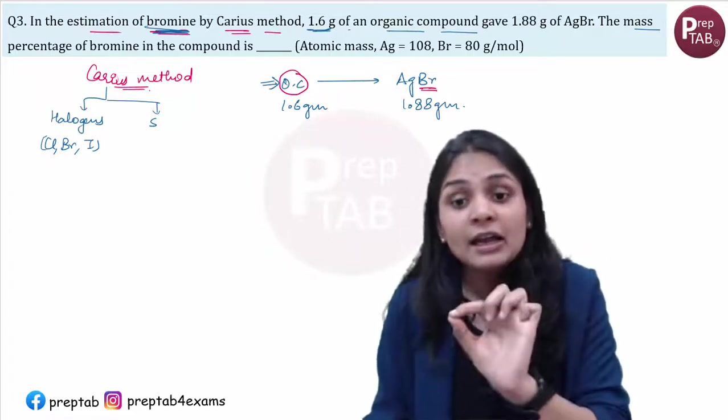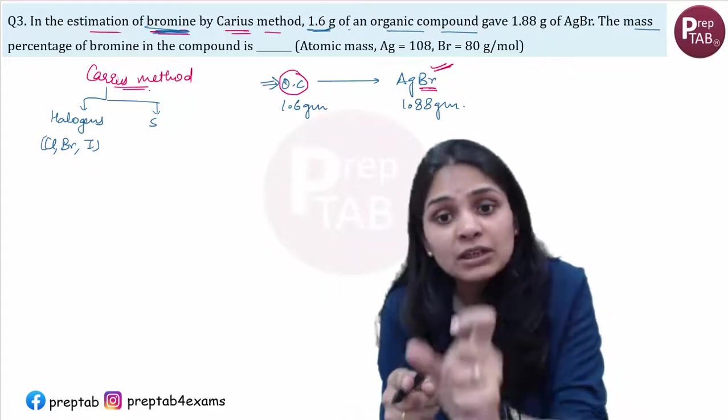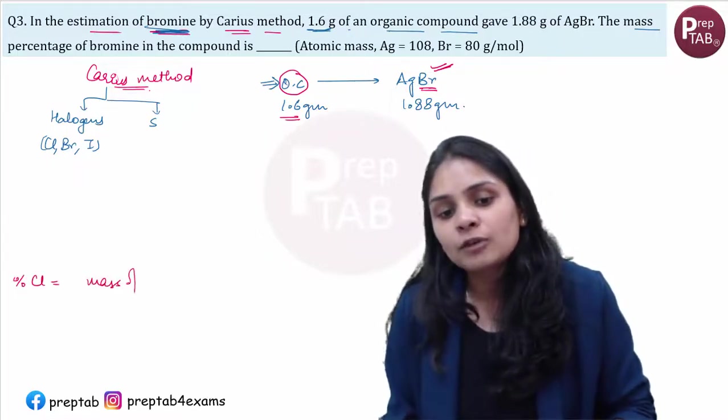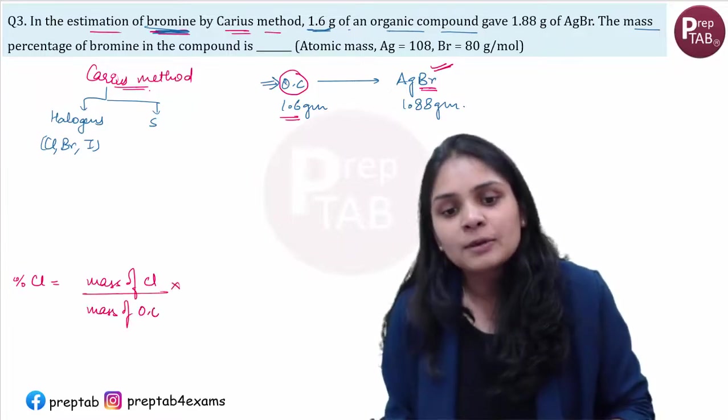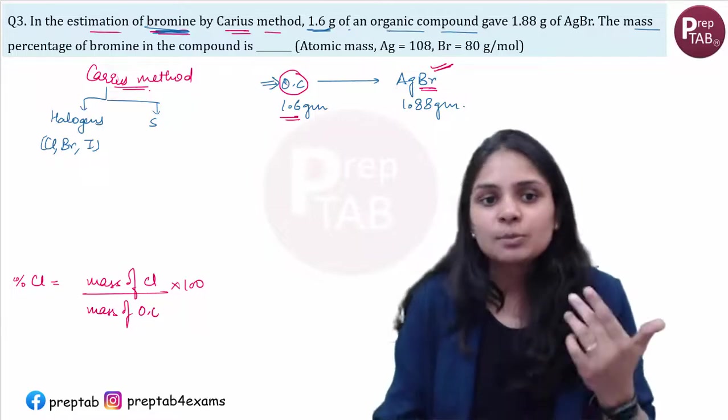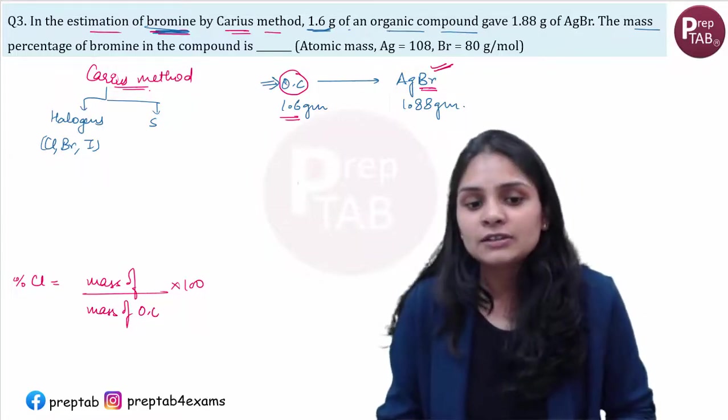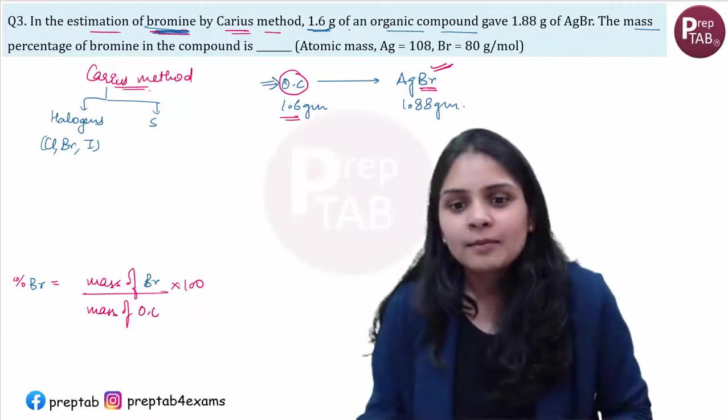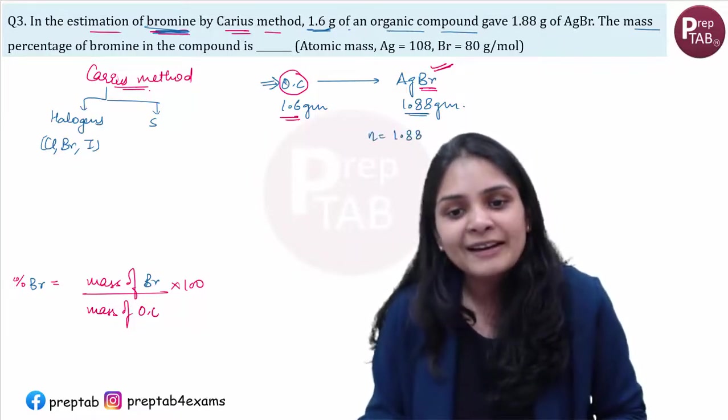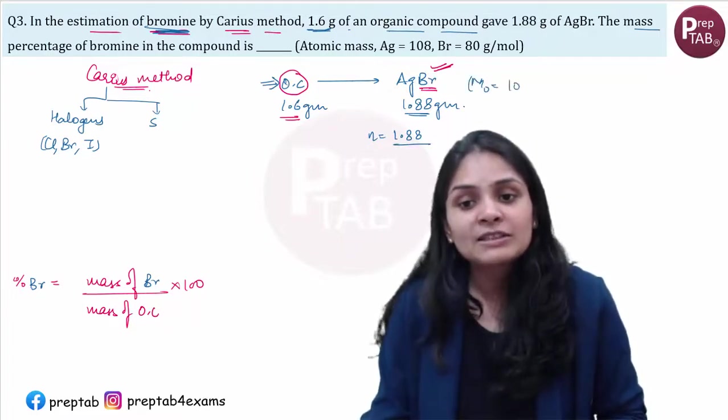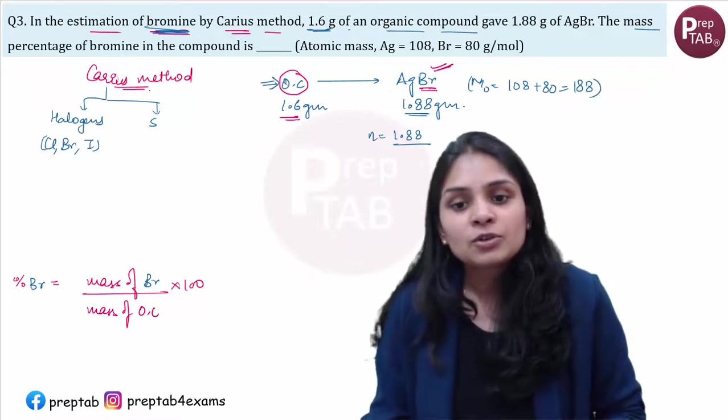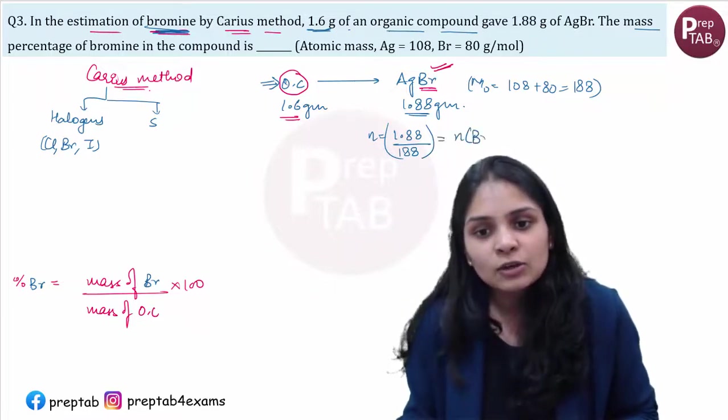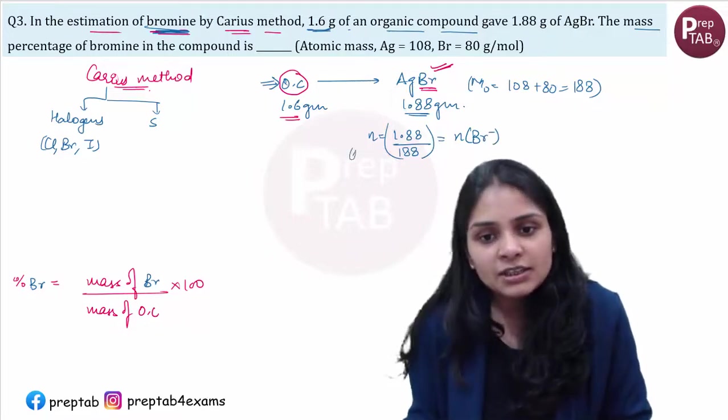So if this bromine mass is 1.6 gram present, percentage of bromine divided by mass of organic compound times 100. Okay, so just this percentage of bromine. Mass of AgBr will be 1.88 divided by molar mass 108 plus 80, this divided by 188. These are AgBr moles, so this is equal to moles of Br minus. One molecule will give bromine ions, into mass of bromine, into molar mass of bromine.